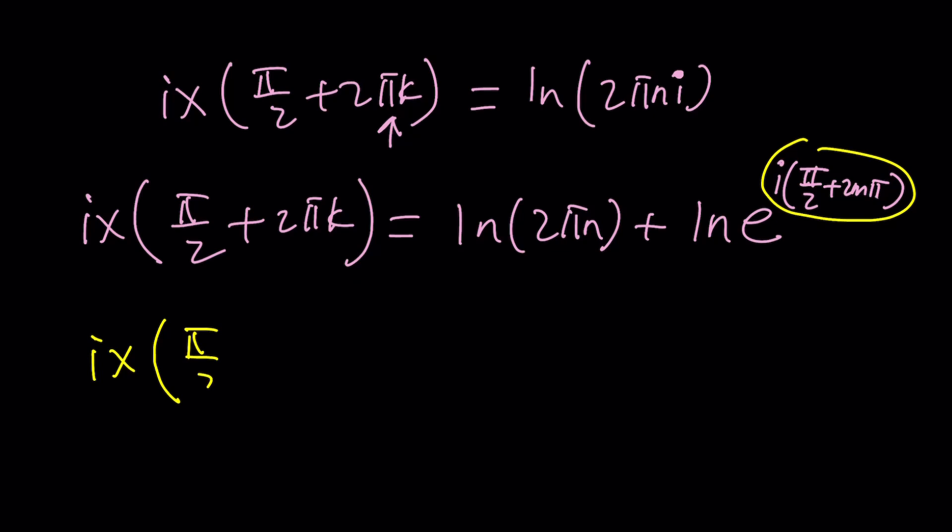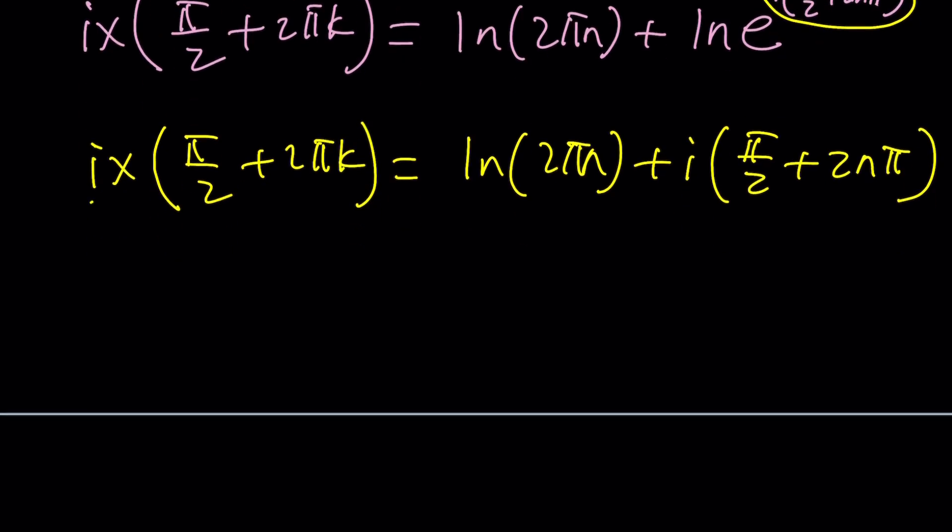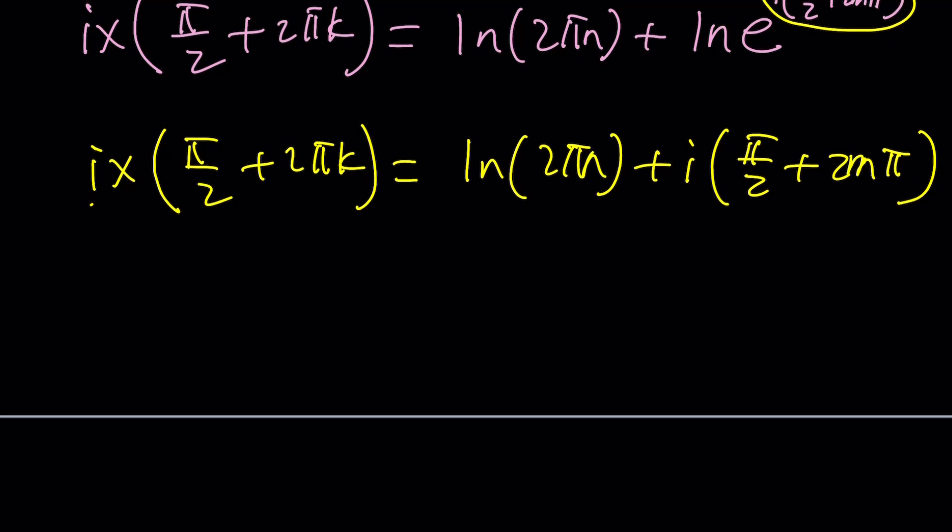That's going to give me ix times pi over 2 plus 2 pi k equals ln 2 pi n. By the way, n is an integer. Did I forget to say that? Plus i times pi over 2 plus 2m pi. And then finally, you can divide both sides by i times this and get the x by itself. But let me tell you something. For simplicity's sake, we have a lot of integers in this equation. Let's go ahead and replace k, n, and m. So how about k equals m equals 0 and n equals 1.